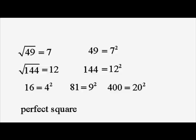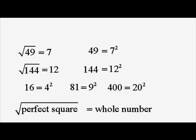So if we take a perfect square number and we take its square root, we get a whole number.